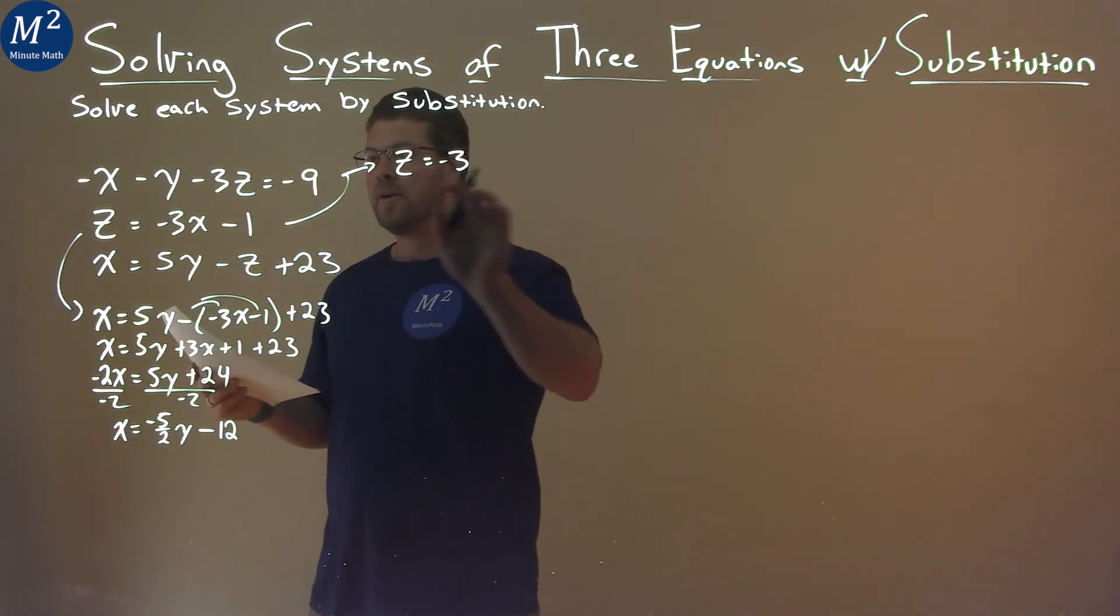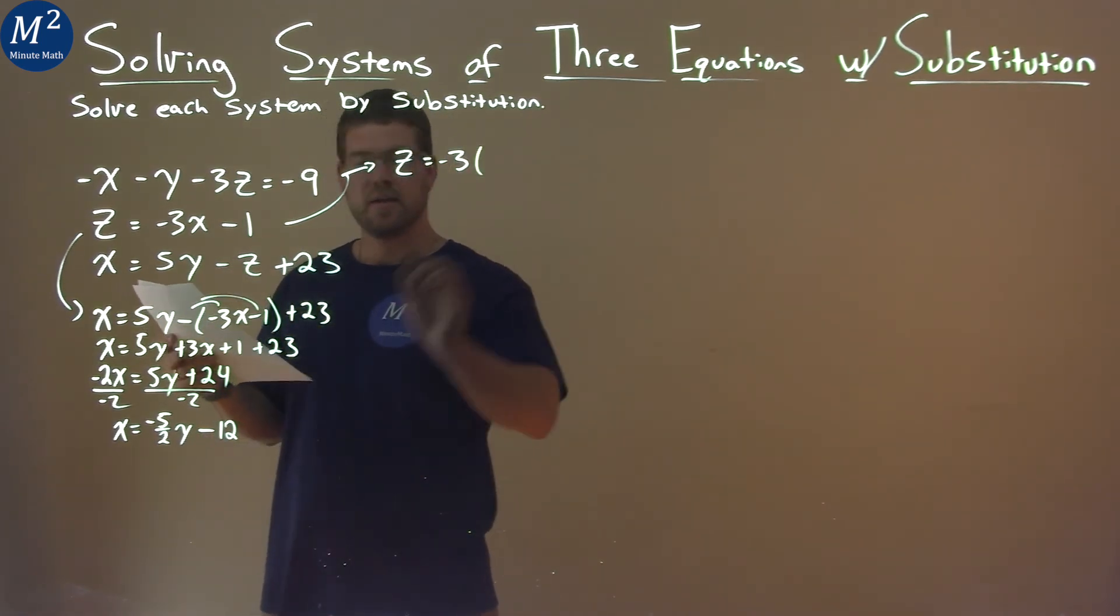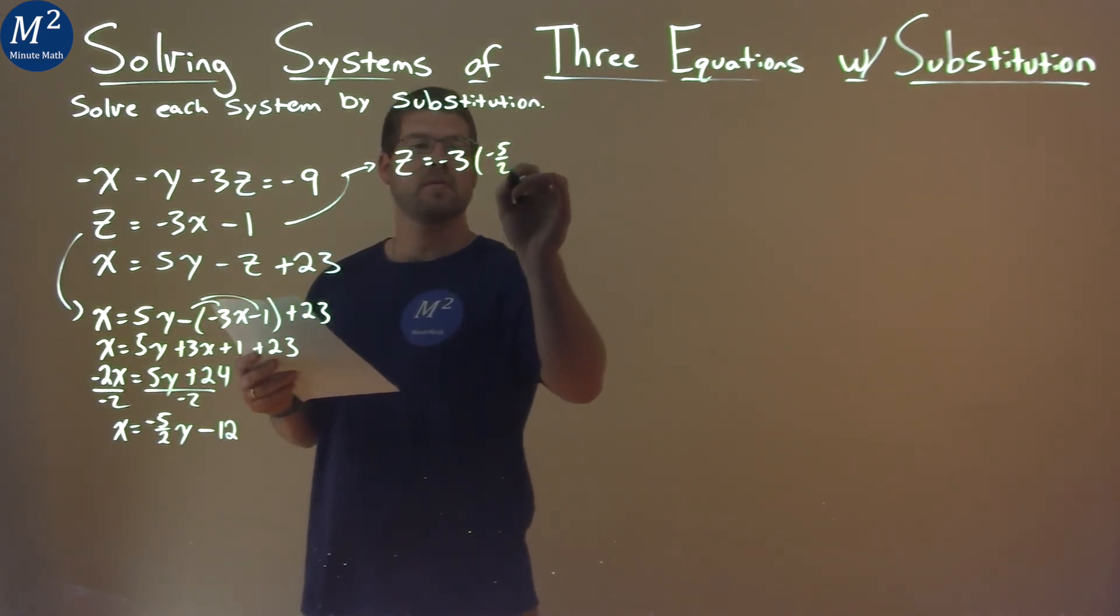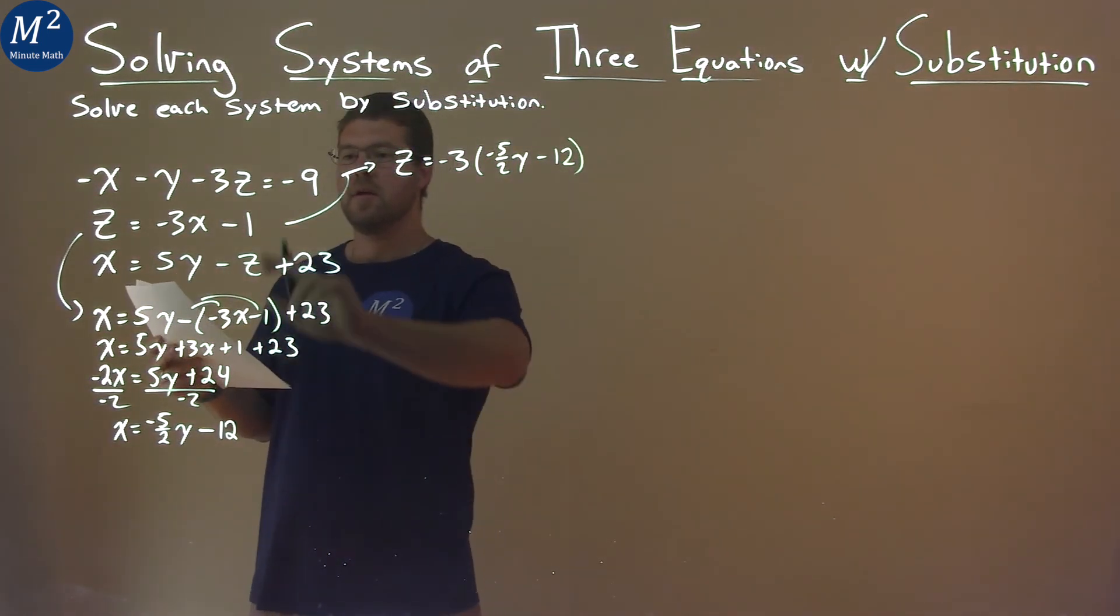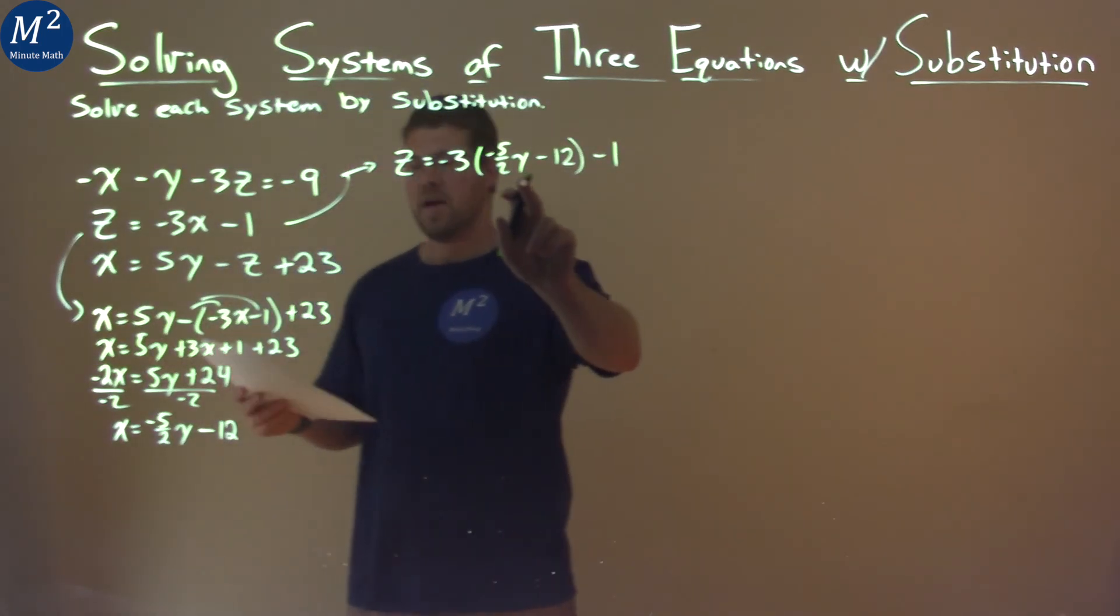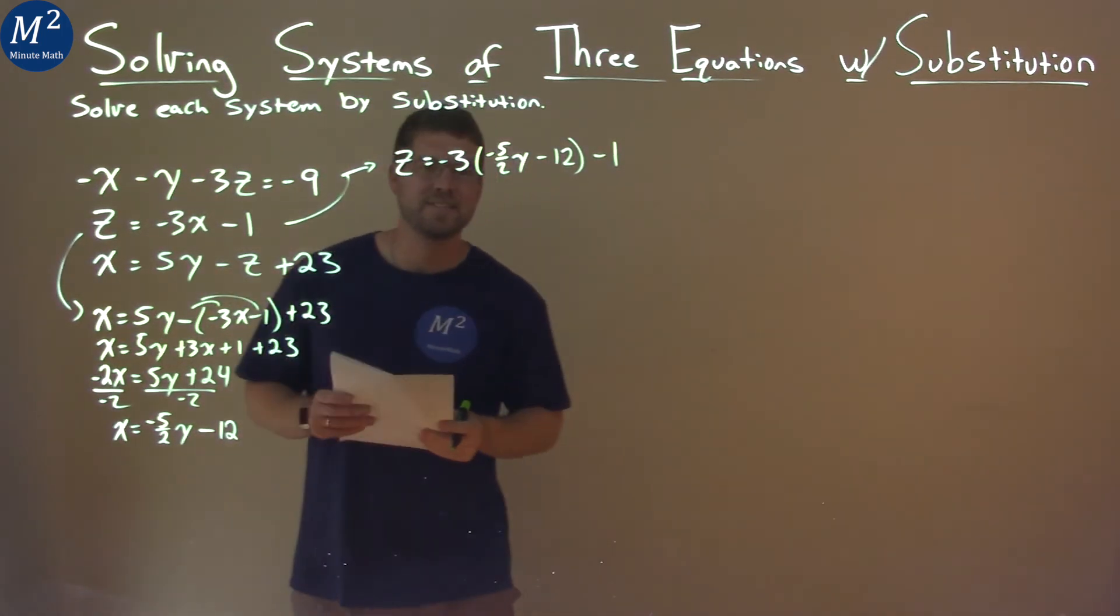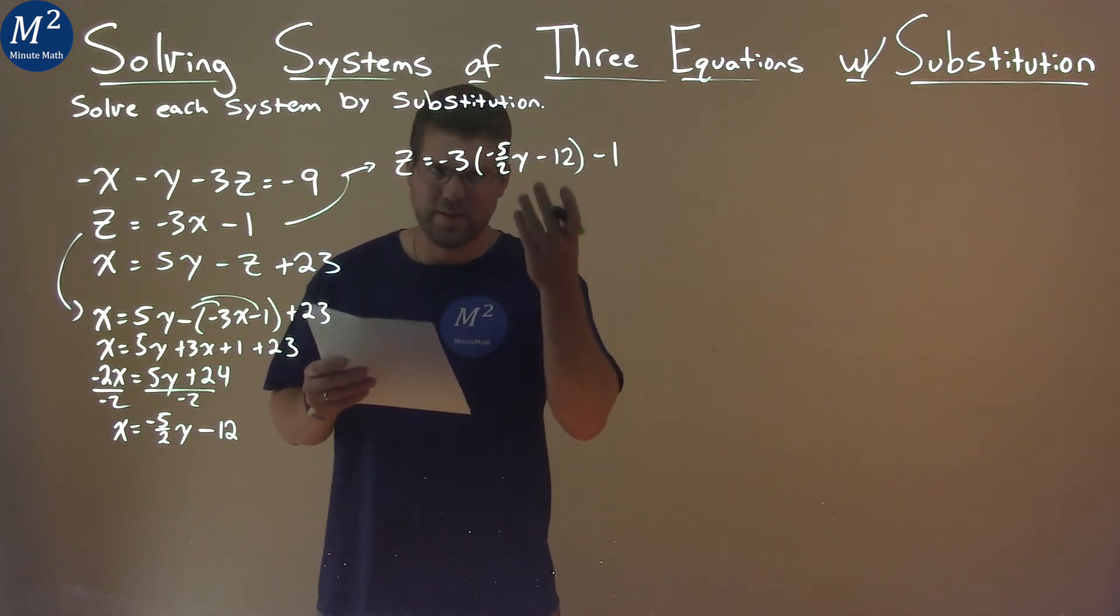So negative 3 right in front of the x, and then instead of x I'm putting this negative 5 halves y minus 12 in, then we have minus 1. So see how it's the same equation here, but instead of x I have what I've also found, x in terms of y. Now we want to simplify this.